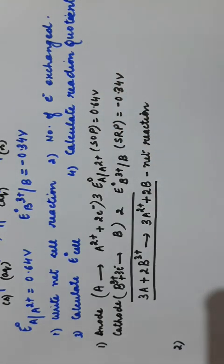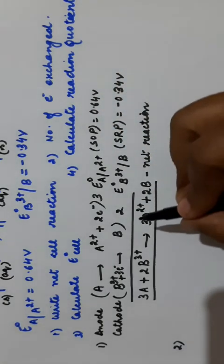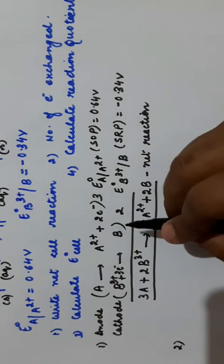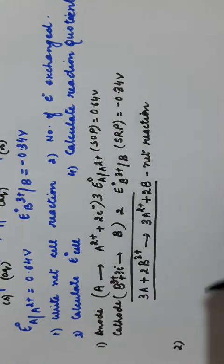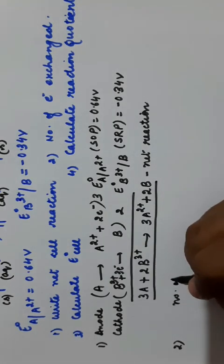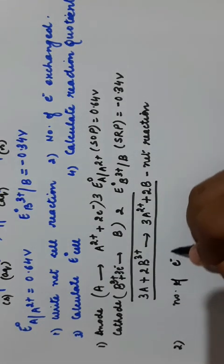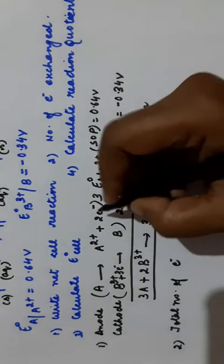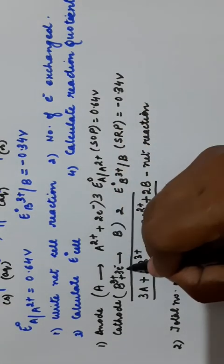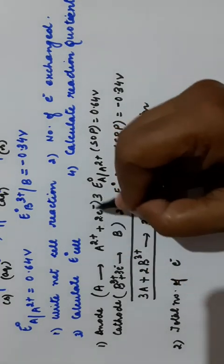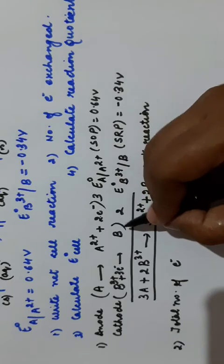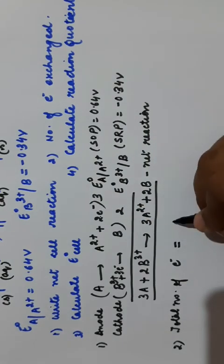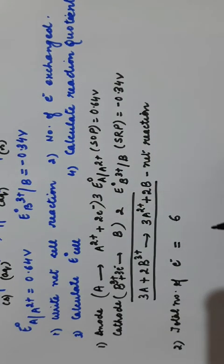Second question: number of electrons exchanged. The number of electrons exchanged equals the total electrons that cancel out. In this case, there were 6 electrons on each side, so the total number of electrons exchanged is 6.